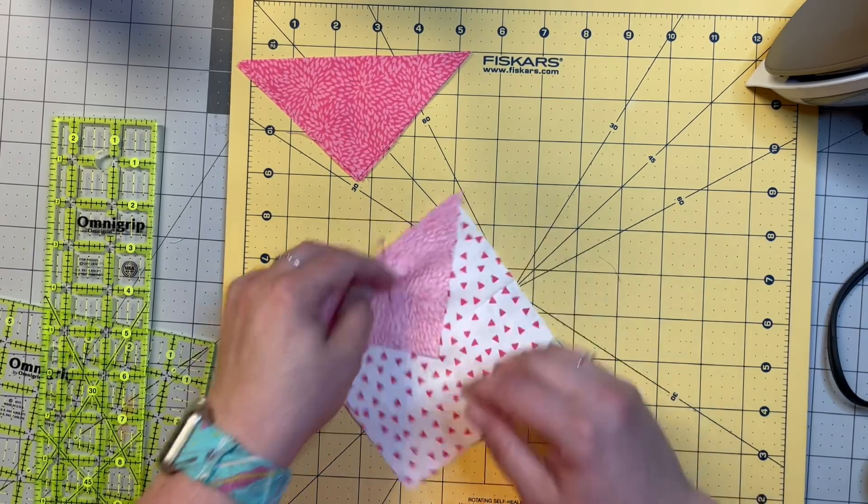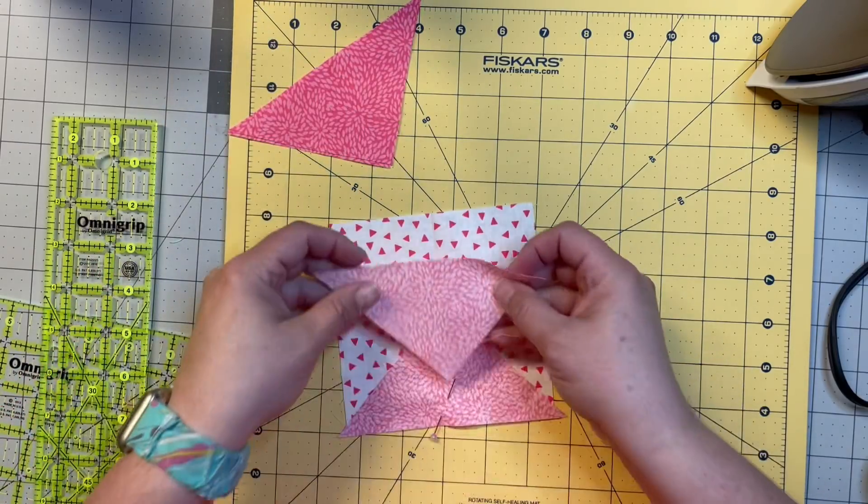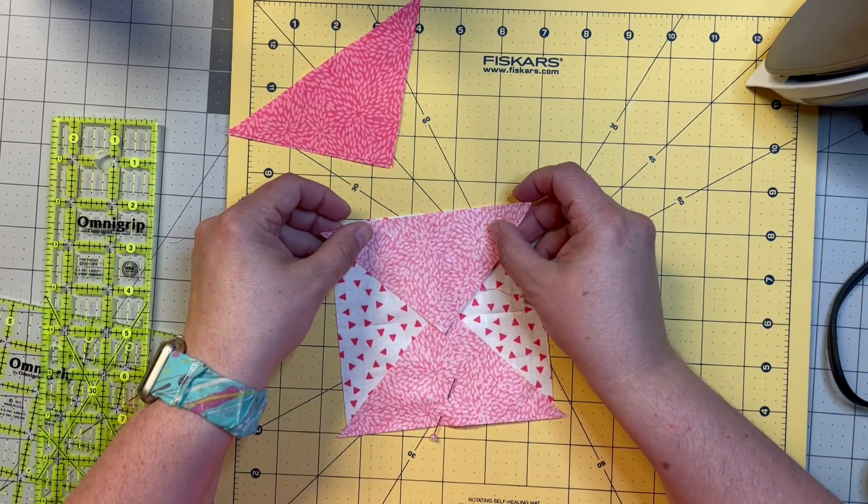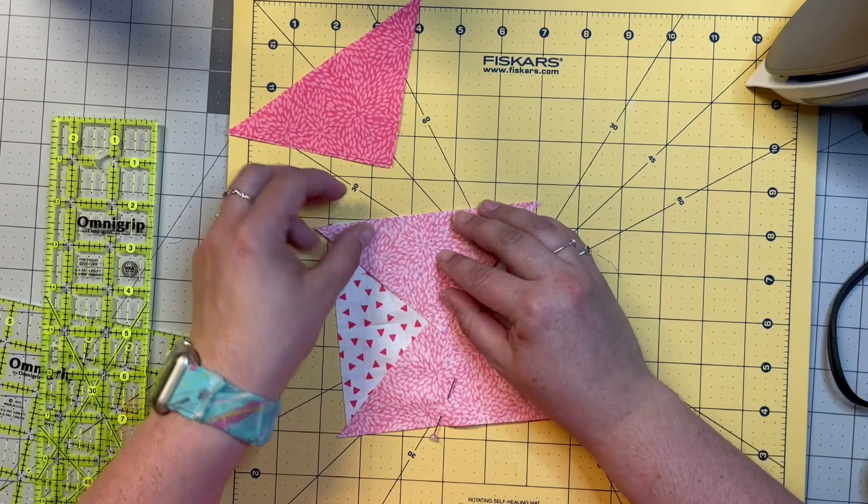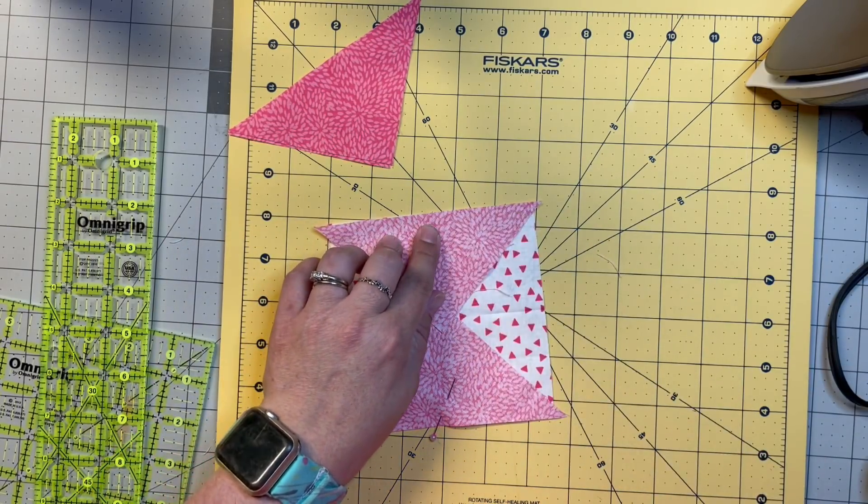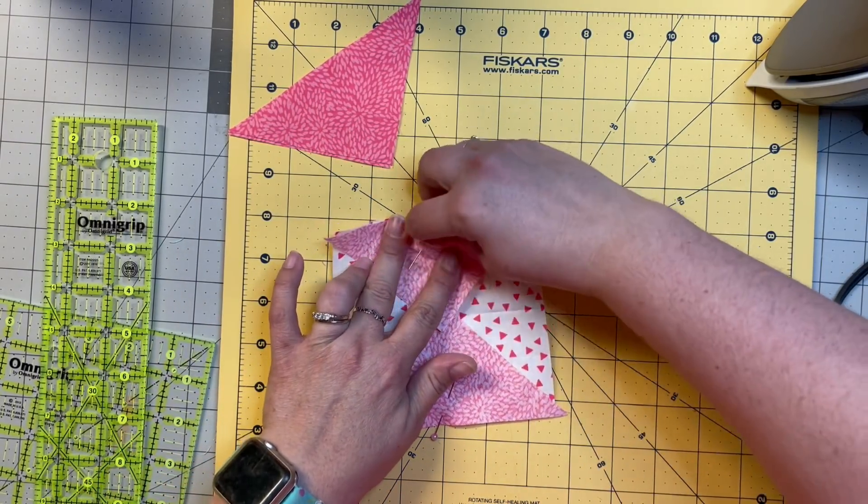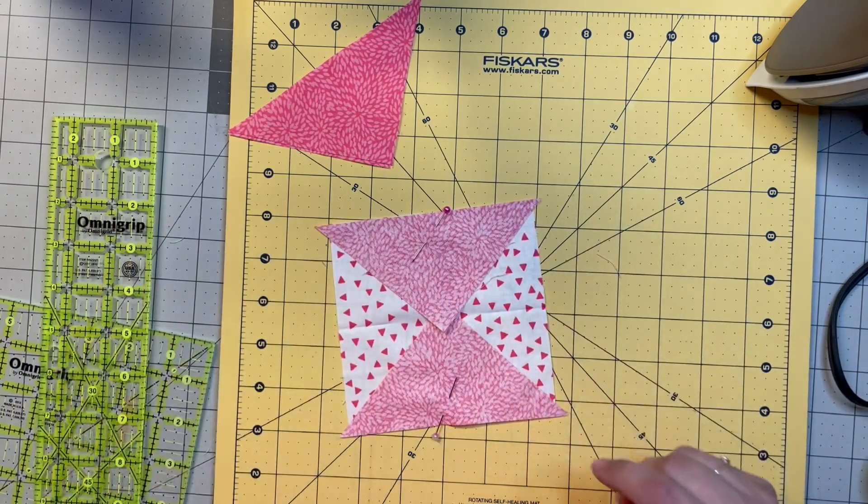Spin it around and we're going to do this side. Line them up right on there, pin it, and I'm going to take this to the sewing machine and sew it right down through.